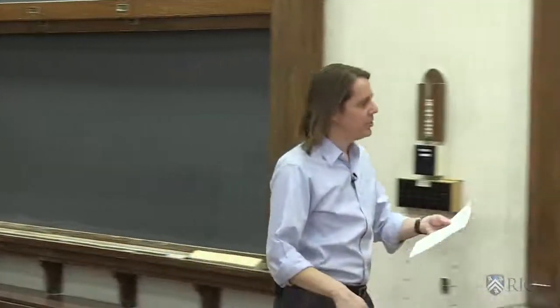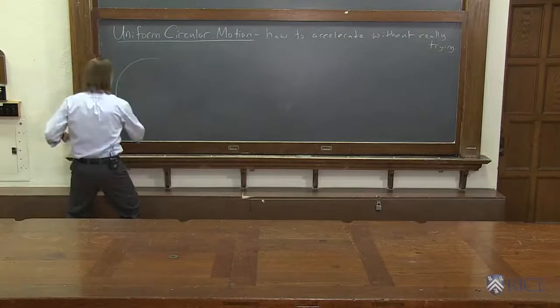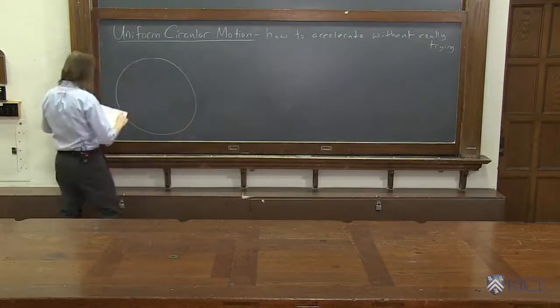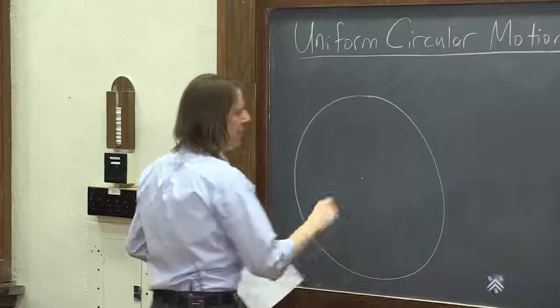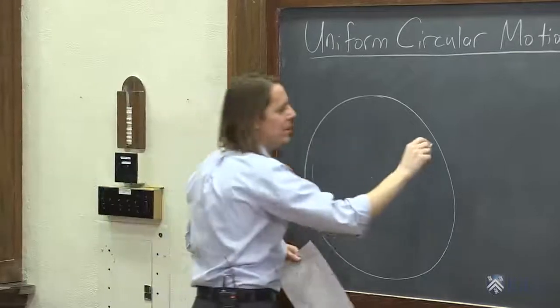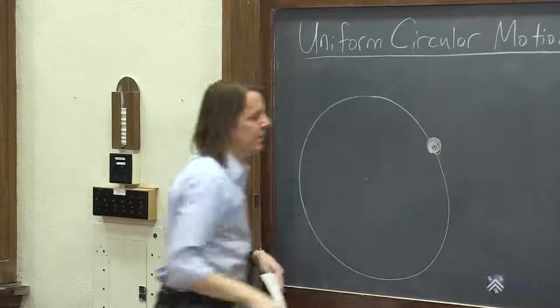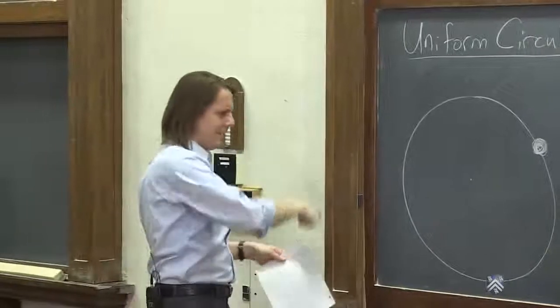So let's draw that motion and see what it looks like. I would just draw a circle like this. And I'd say at some point, the ball, as though we're looking down, is right here. It's going around like this.